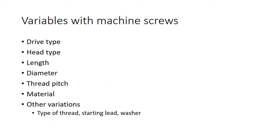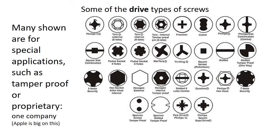Let's look at the different variables within machine screws. You've got the drive type — slotted, Phillips, whatever — the head type such as pan head or flat head, the length, which is determined by how long the threaded or useful part of the screw is. You've also got your major and minor diameter, thread pitch (how many threads per inch), material, different kinds of starting threads, and different types of threads.